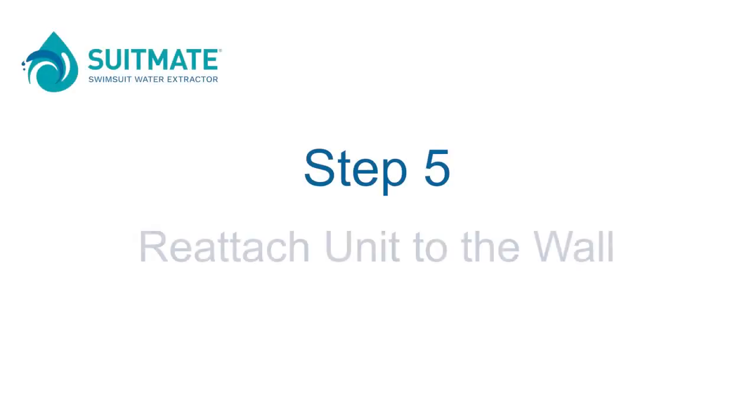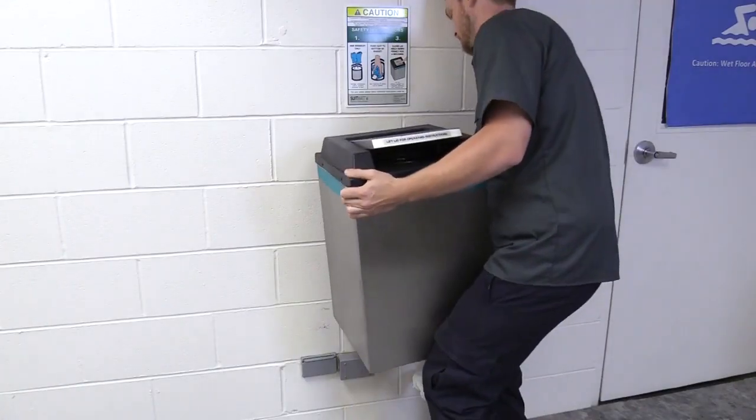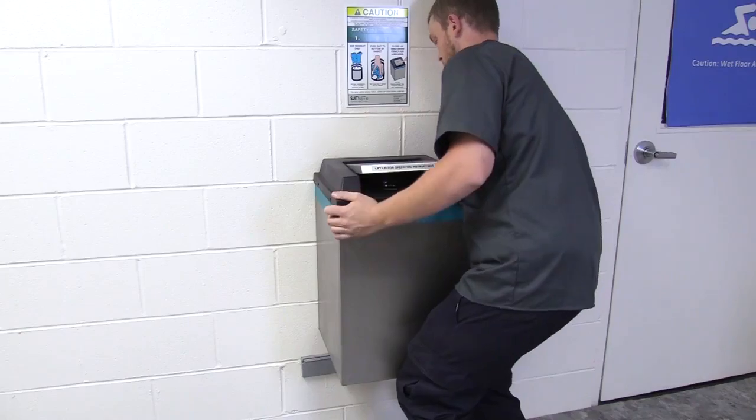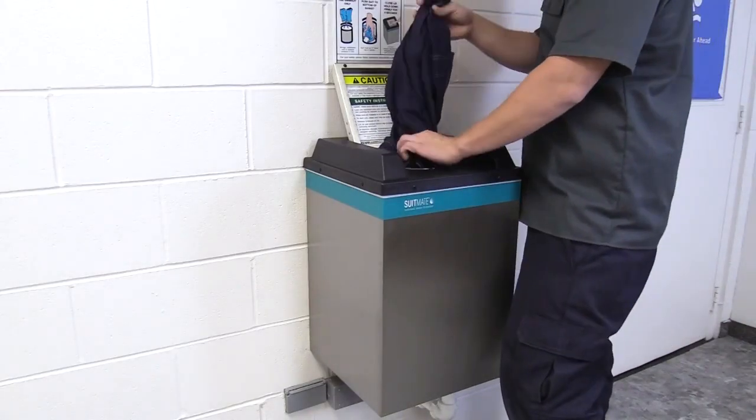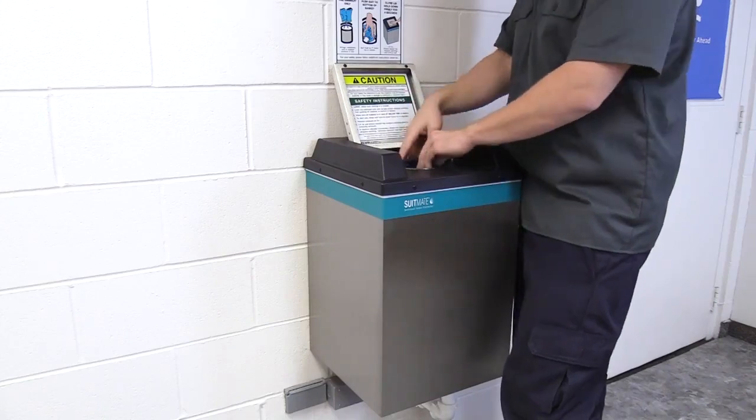Step 5. Reattach the SuitMate unit to the wall. Return the SuitMate unit to its proper location and reconnect all utilities. Test the SuitMate unit by putting a wet swimsuit in the unit according to the instructions on the underside of the lid.